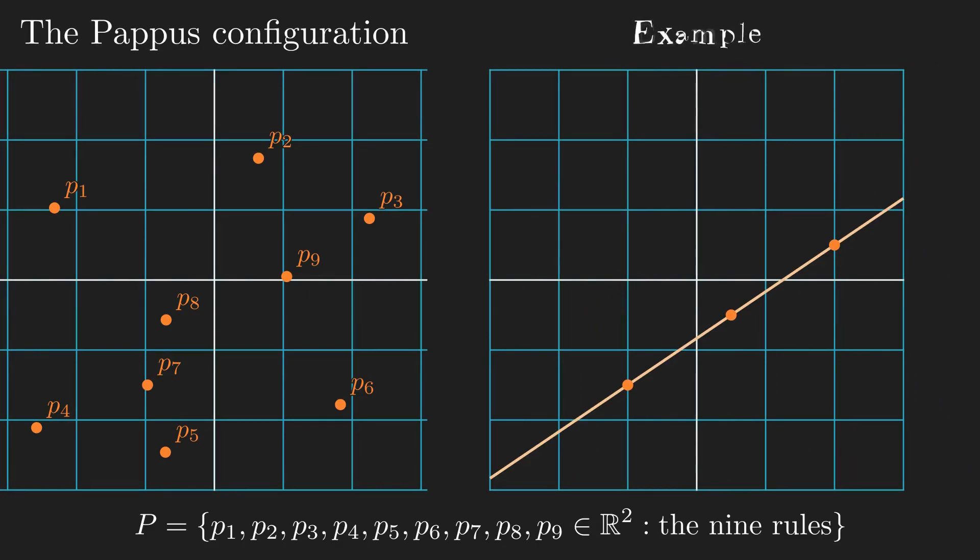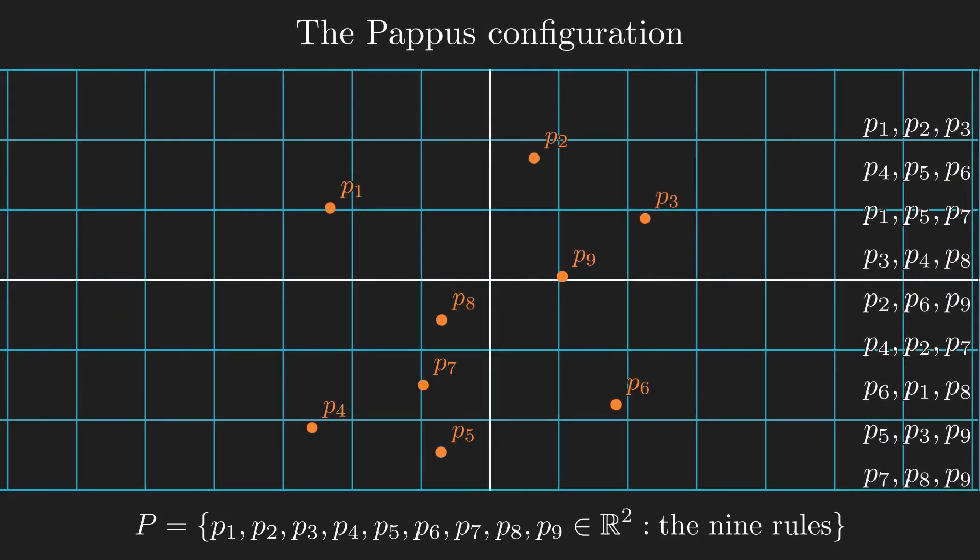When three points are collinear, there exists a line that can be on all three points. For example, these three points are collinear, but now they're not collinear, since no line can be on all three points. With this, I can start constructing the Pappus configuration.